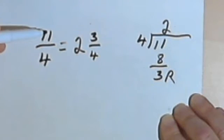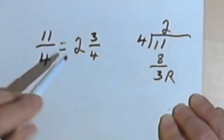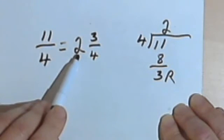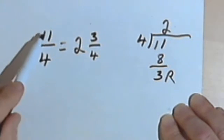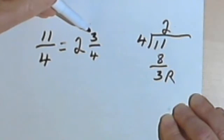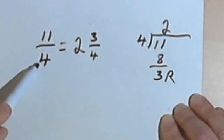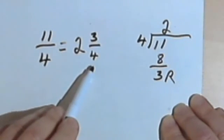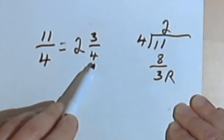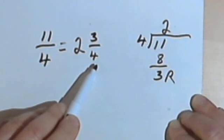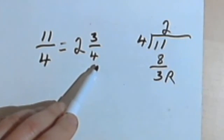Whatever whole number you get is going to be the whole number part of your answer. Whatever remainder you had when you did the division is going to be the numerator of the fraction part of your answer. And the denominator of your original fraction will be the denominator of the fraction part of your answer. And that's all there is to it.